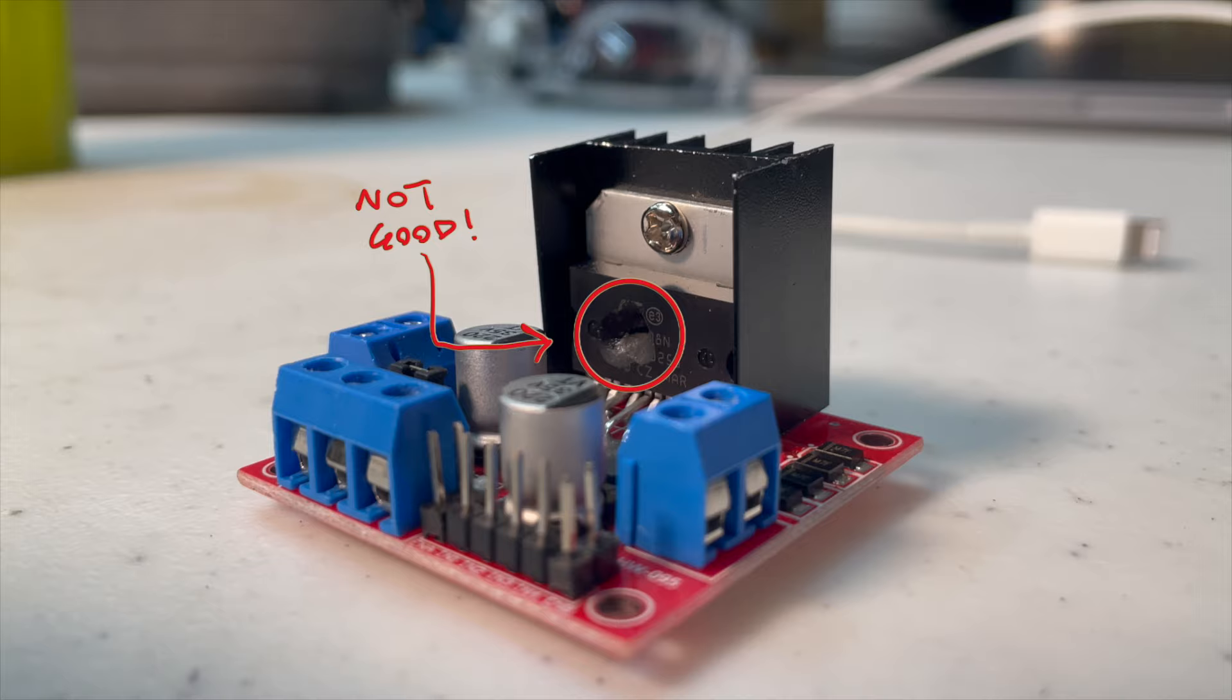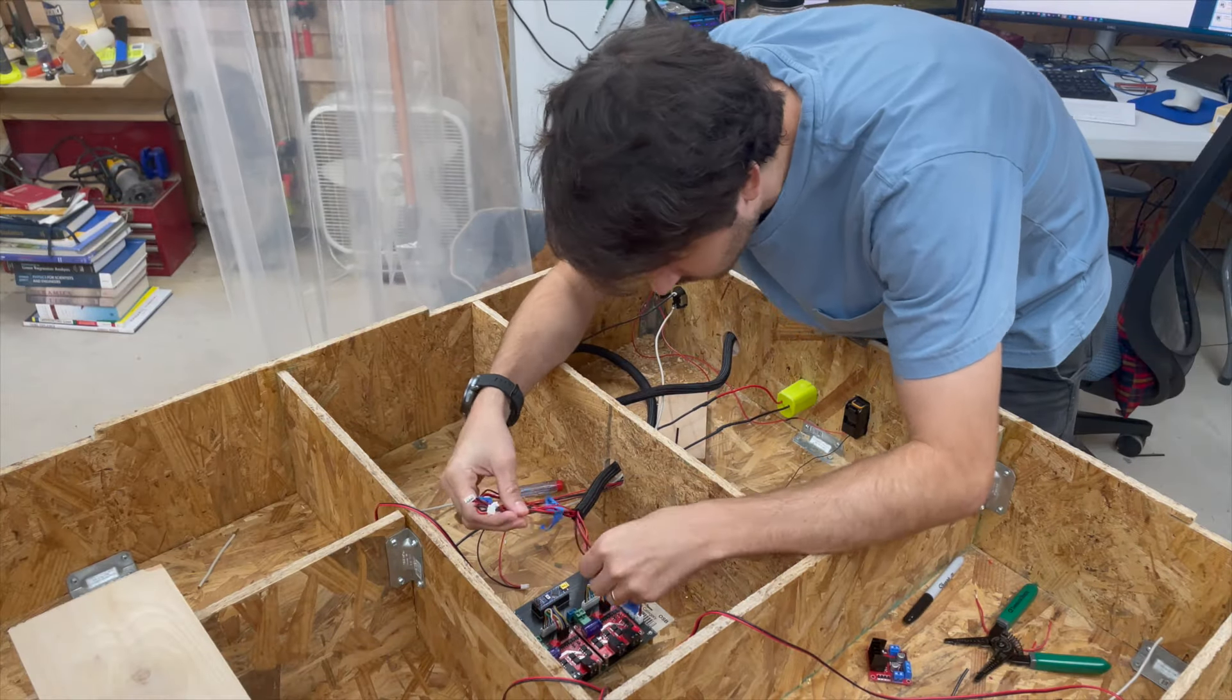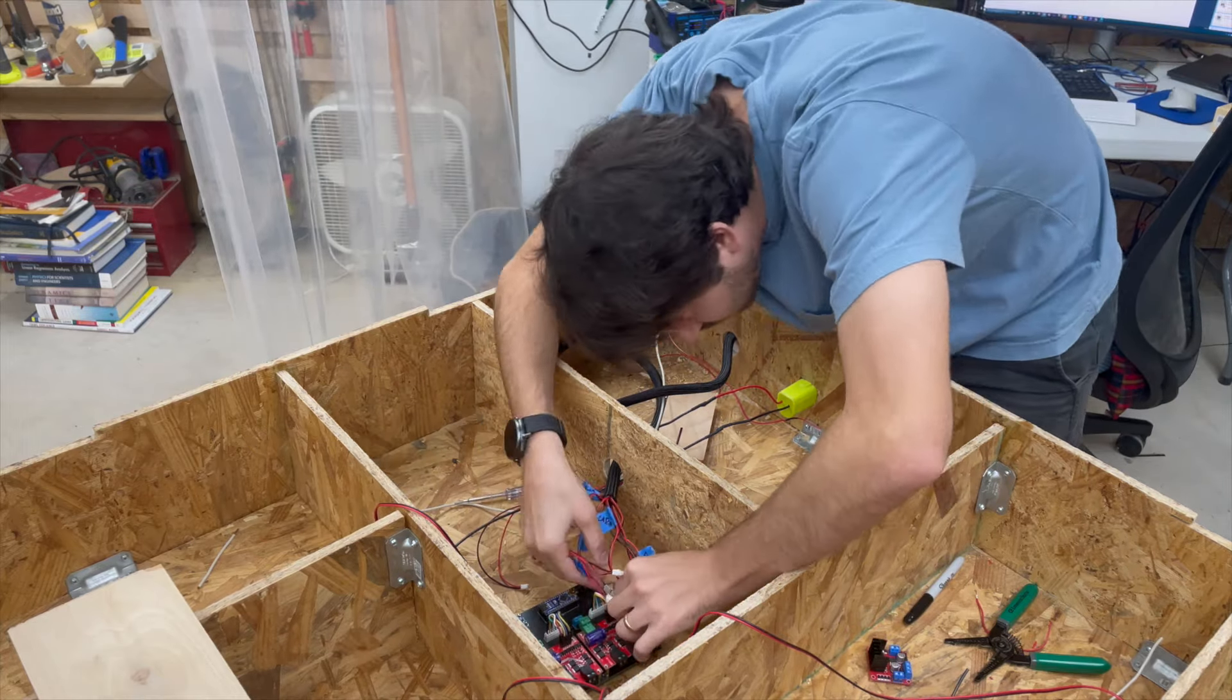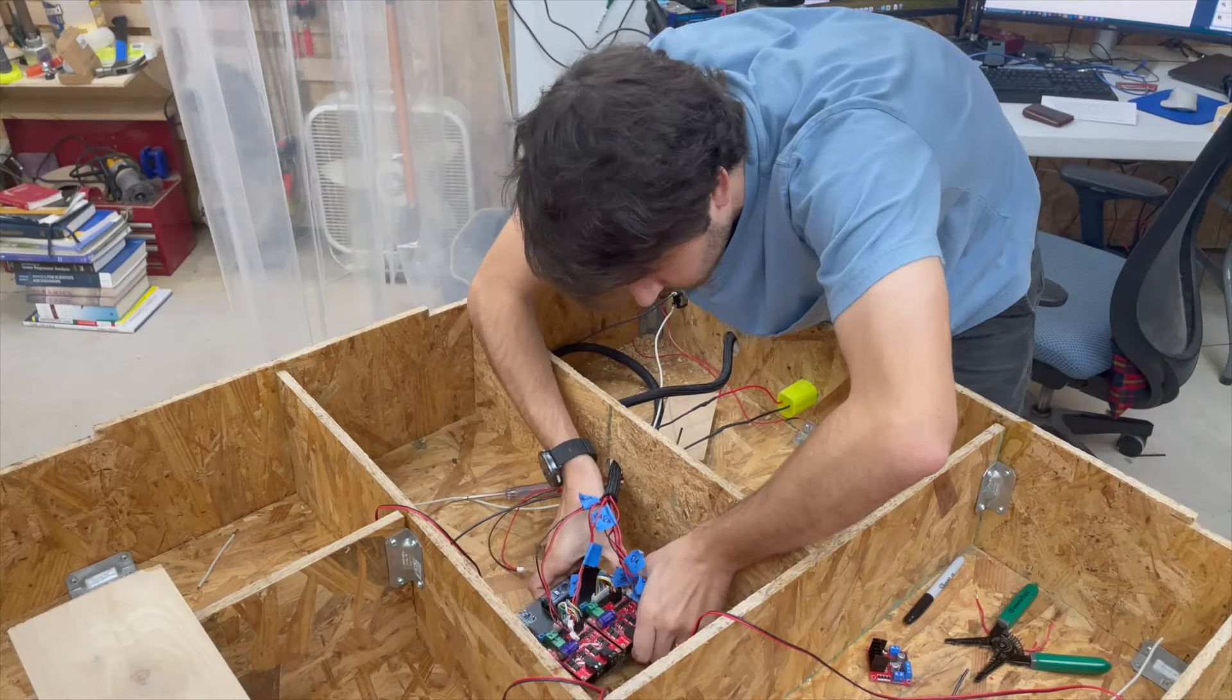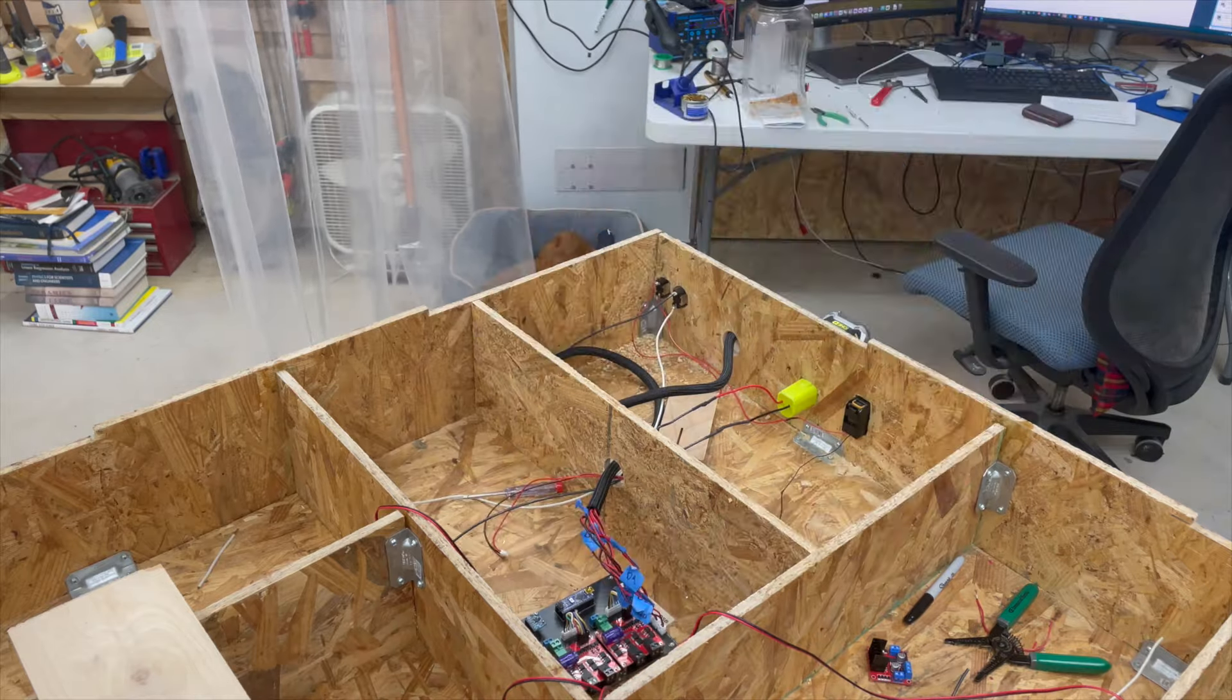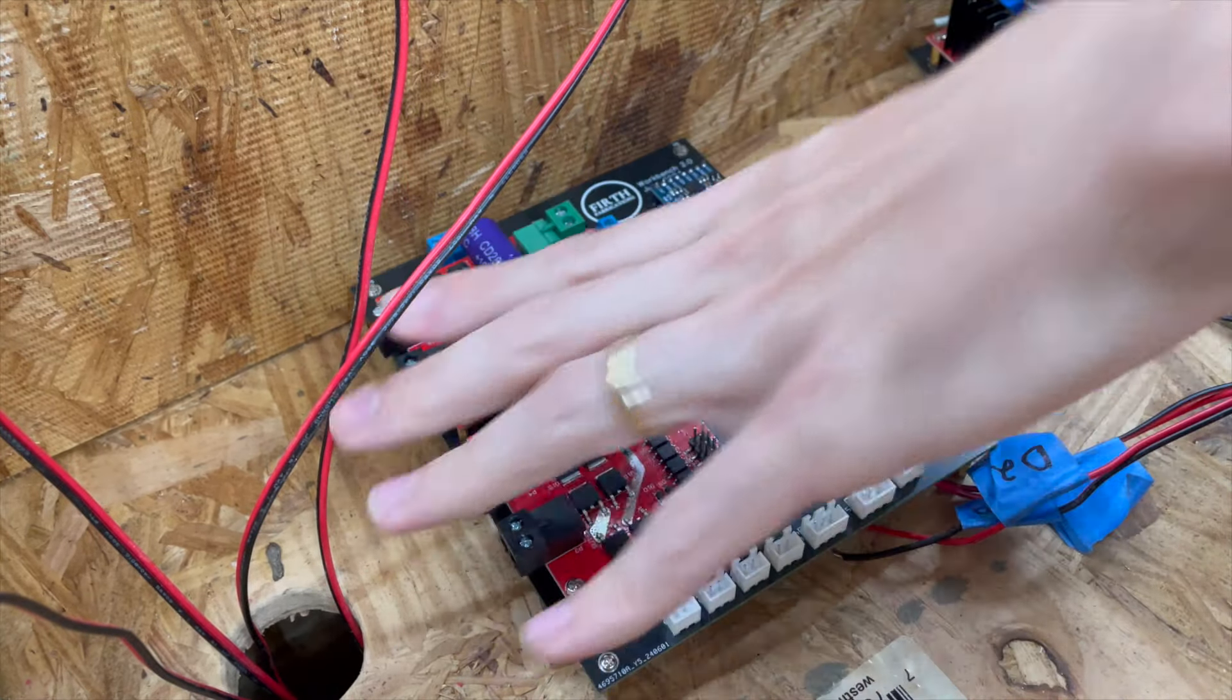Ultimately, it seemed my motor drivers were not rated for the current the linear actuators wanted to draw. I really didn't want to redesign my PCB, so I tried all sorts of things to make it work. Additional resistors, a current limiting buck converter, even some of my own tears. Some of these things got me functional, but with limited performance. Some didn't work at all. Eventually, I just had to swallow my pride and redesign the PCB.